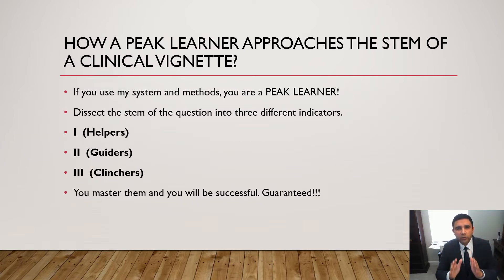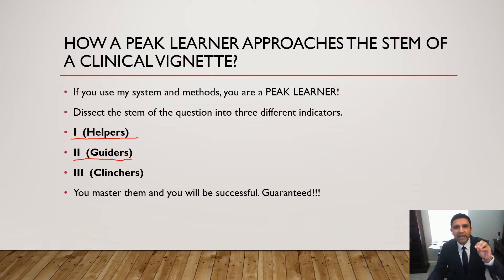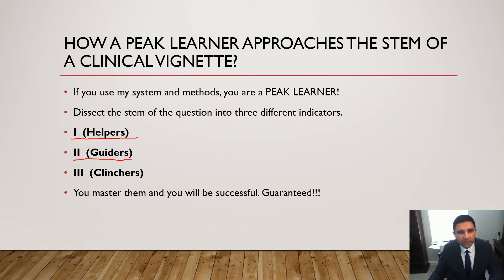The way I want you to approach the clinical vignette as a peak learner is to dissect the stem of the question into three different indicators. The first indicator is your helpers. The second are your guiders — they guide you. And the third are the clinchers — they clinch the diagnosis for you. Master them and you will be successful.